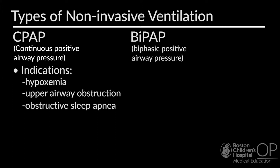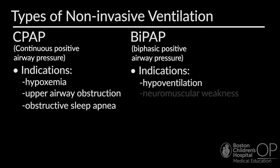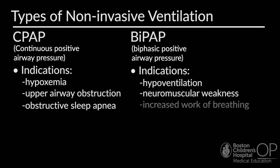BiPAP is biphasic positive airway pressure. BiPAP is sometimes used for hypoventilation, neuromuscular weakness, or to support in the setting of increased work of breathing. BiPAP delivers two levels of pressure for inhalation and exhalation, and may have a backup rate.